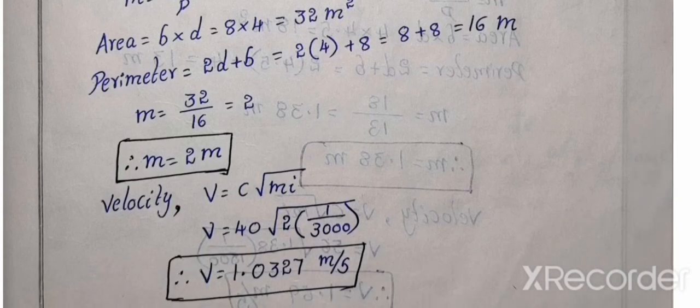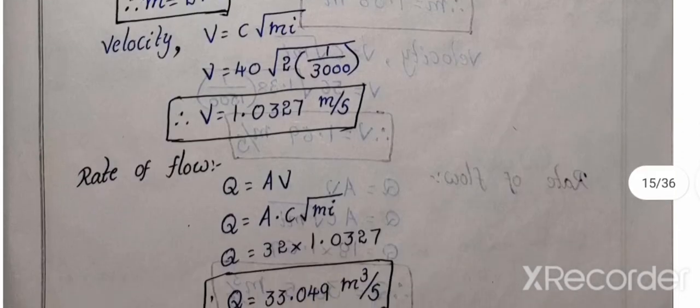V equal to C root Mi. C value 40, root M value 2, i value 1 by 3000. So simplify, V equal to 1.0327 meter per second. So velocity, rate of flow, nothing but discharge. Q equal to A into velocity. Q equal to A, 32, velocity calculation. So per second, this will be 1.0327. So Q equal to A, 32, velocity. So Q equal to 33.049 meter cube per second.